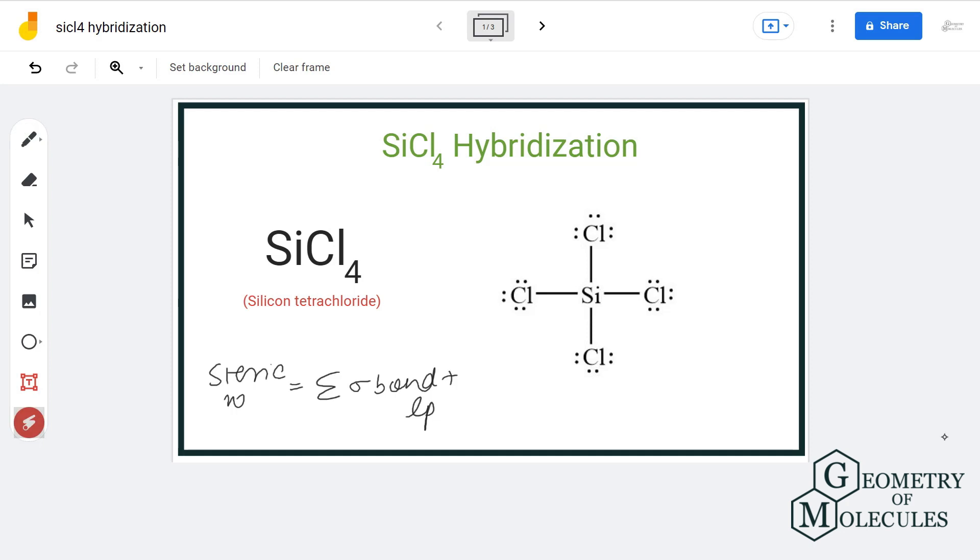Let us have a look at the Lewis structure of SiCl4. We can clearly see that the central atom silicon has formed four sigma bonds with four chlorine atoms and has no lone pairs of electrons attached to it.